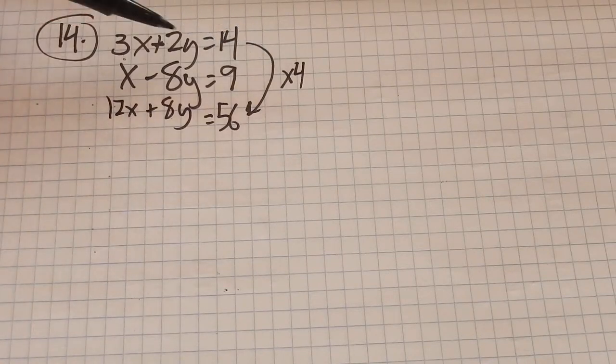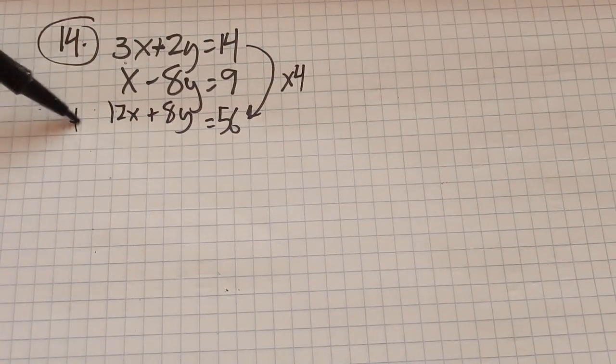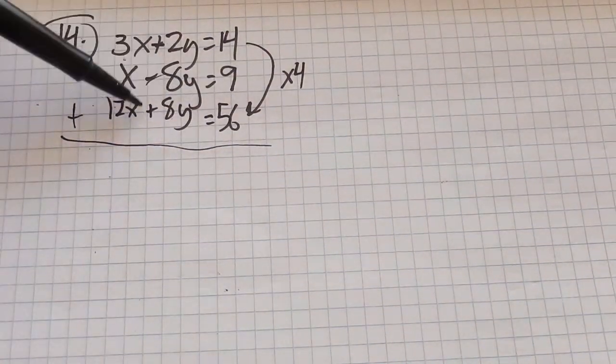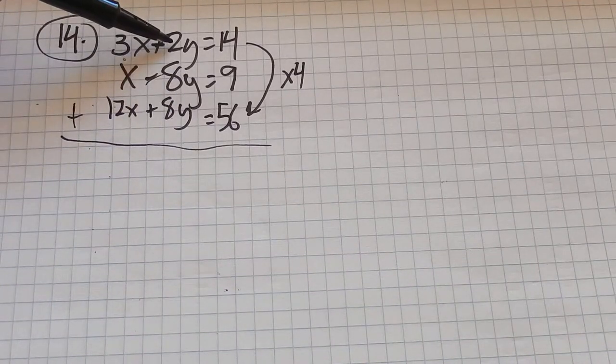And so notice why I multiplied by 4, because now when I add these together, the y's are going to cancel out. I wanted this 2y to be a positive 8y.